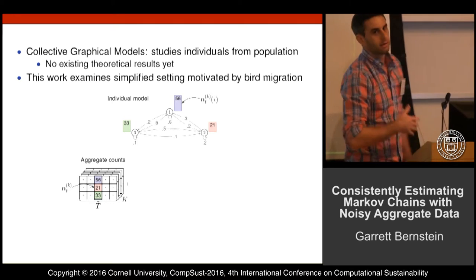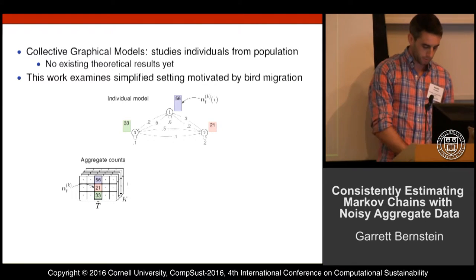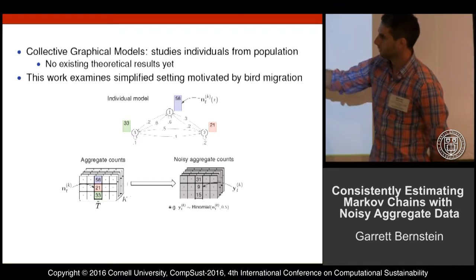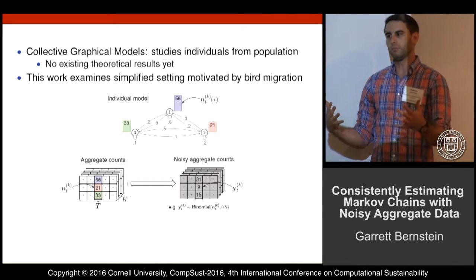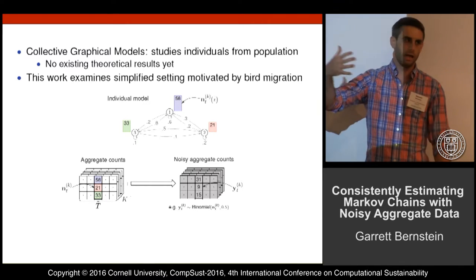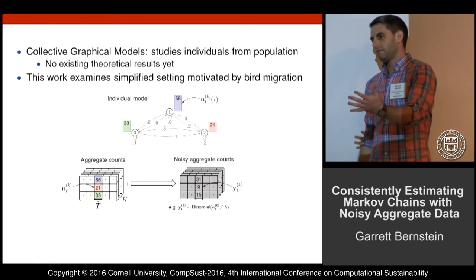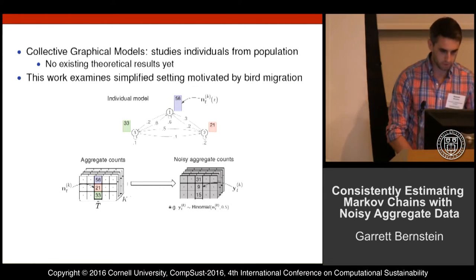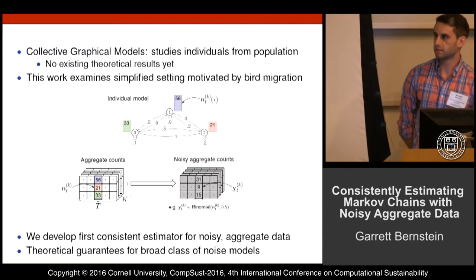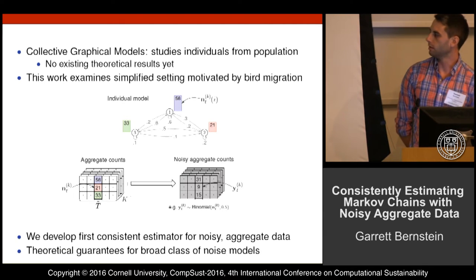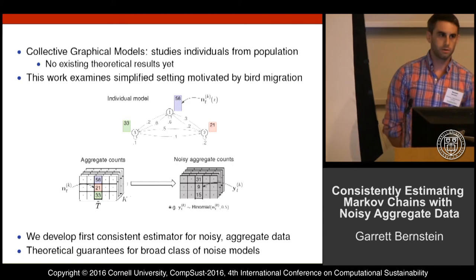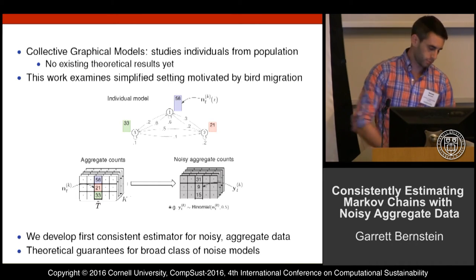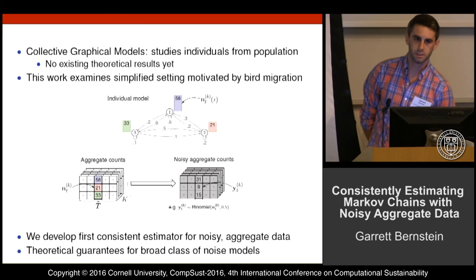We extend this with noisy observations — for example, a binomial model representing bird watchers walking out into the woods who only have a 50% chance of seeing a given bird. We use method of moments and can consistently estimate this with the noisy aggregate data, and also give theoretical results for a broad class of noise models. More details are at the poster — looking forward to seeing you there.